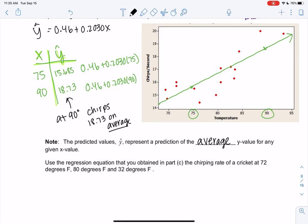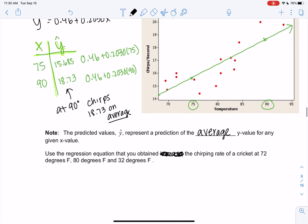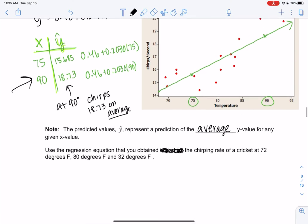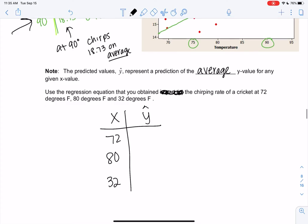So let's use the regression equation that you obtained to find the chirping rate at 72 degrees, 80 degrees, and 32 degrees. We'll do the same thing we did here, but we'll plug in 72, 80, and 32, and we'll find the predicted y hat values. If you're feeling confident, go ahead and plug those in.